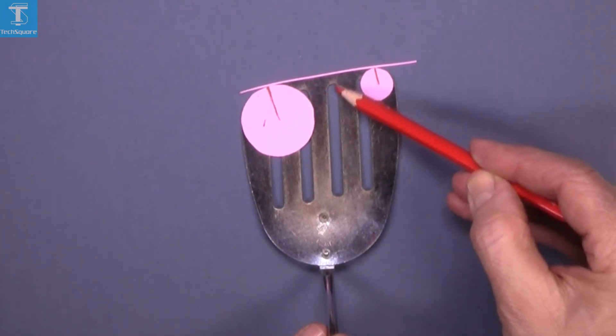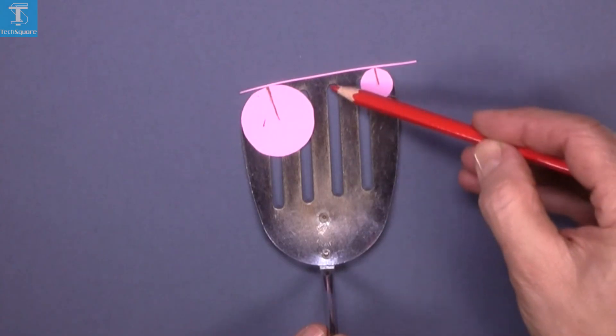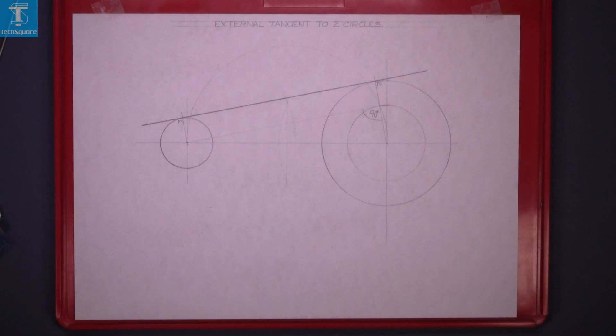So this circle here and this circle here, there's also an external tangent. That's your external tangent to the two circles. Complete.